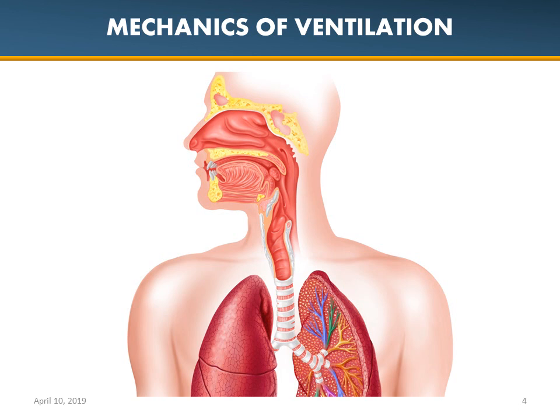During inspiration, our intercostal muscles and diaphragm contract, causing a change in pressure within the thorax. This increases the chest wall size, decreasing the internal pressure, causing air to rush into the lungs to equalize pressure. When we exhale, the diaphragm and intercostal muscles relax, increasing pressure and forcing air out of the lungs. Our breathing rate is controlled by chemoreceptors within the brain and main arteries — specifically the aorta and carotid — which monitor oxygen and CO2 in the blood. When saturations fall or CO2 rises, ventilations accelerate to restore homeostasis.